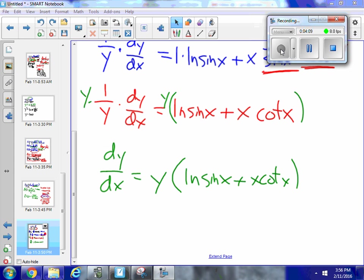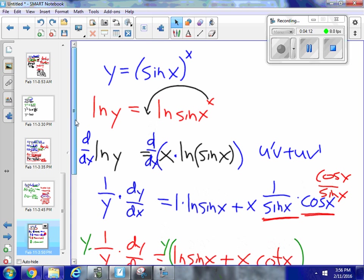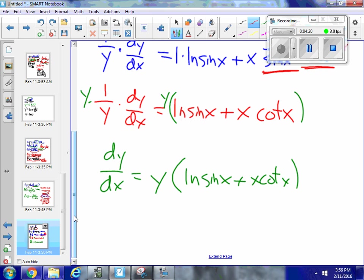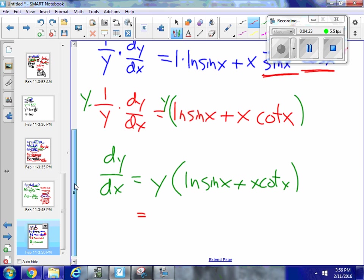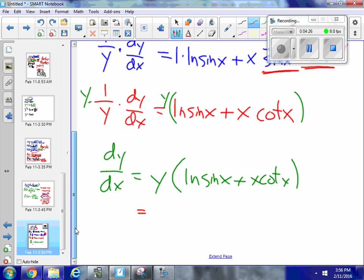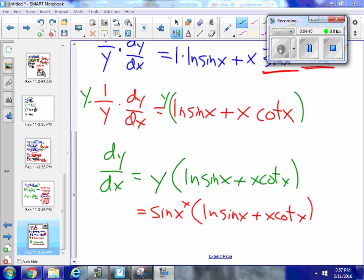And just to make things really nice and tidy, I go back up here and I see y is equal to sine x to the x. So there's no real reason to have a y on this side of the equation. I'm just going to call it sine x to the x. So this is sine x to the x times log sine x plus x cotangent x. And that is my derivative of this function.